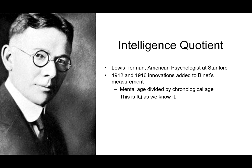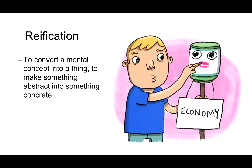I want to introduce a concept — reification. When you reify something, you convert a mental concept into a thing; you make something abstract into something concrete. For example, the economy: it's a whole bunch of different things, but there isn't a literal physical thing you can go and see. It's a concept we've created and turned into something real. Binet thought intelligence is too complex to capture with a single number, but the Stanford-Binet test produced a number. Numbers measure things, and so IQ became a thing — it was reified. The reification of intelligence was set in motion.